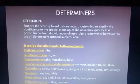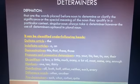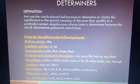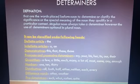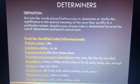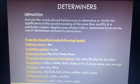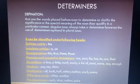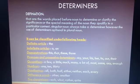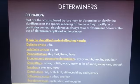We classify determiners under the following headings. First is the definite article. The definite article is 'the.' You know the two pronunciations: 'thuh' and 'thee.' Both are correct — 'thee' is used before a word that starts with a vowel sound, and 'thuh' is used before a word that starts with a consonant.